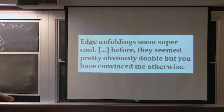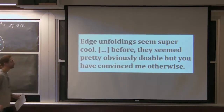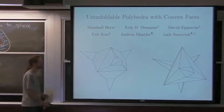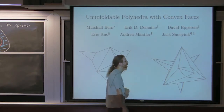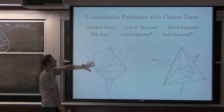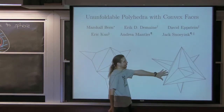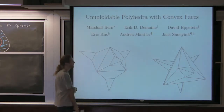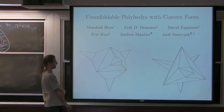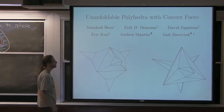Next topic: going back to edge unfolding. Someone commented these problems seemed obvious at first. Some evidence for edge unfolding being difficult is this polyhedron which we proved has no edge unfolding — we call it edge un-unfoldable. This is actually the first example we came up with. It has fewer faces: six faces per hat times four hats, so 24 faces. This was done in 1999.